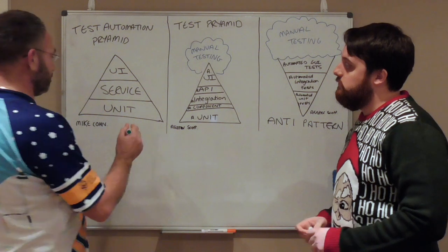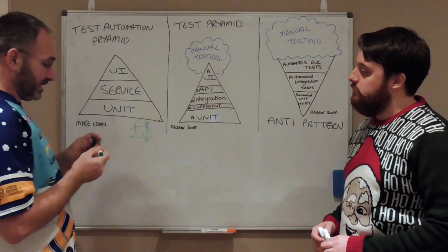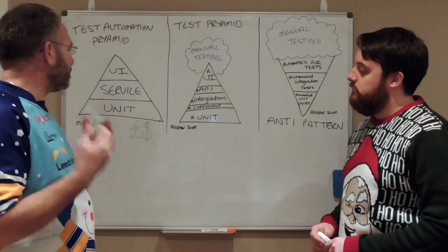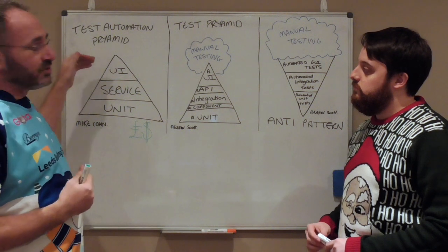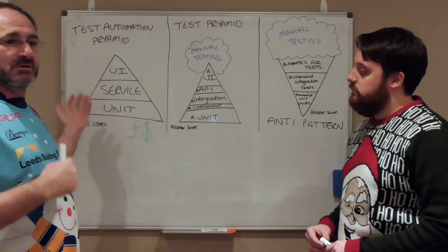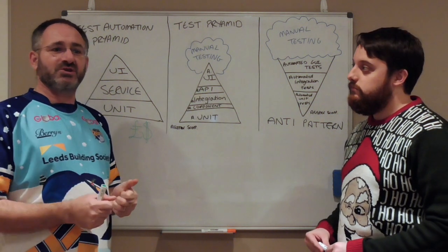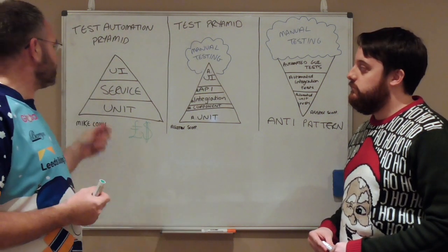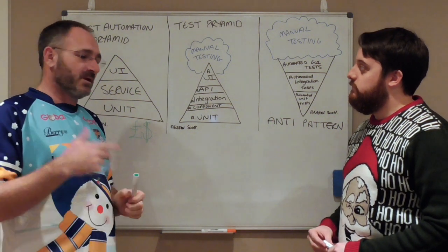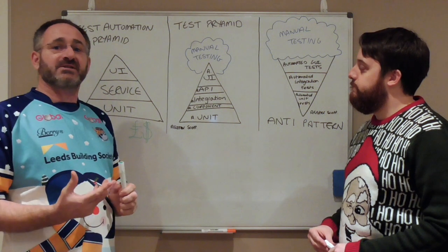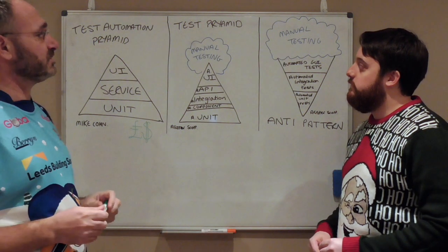Mike wanted to highlight the fact of the value — and the cost. It costs, and did cost, more to do automation at the UI level rather than the service level rather than the unit level. So the focus of the pyramid was to say these are the costs of automation: it costs less at the bottom, so do more of it, and it costs more at the top. That's where the history of the pyramid came from, and it was solely for test automation.